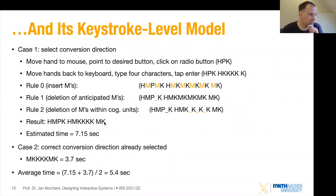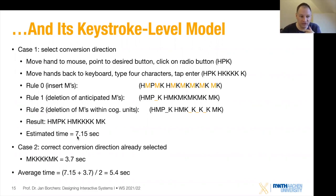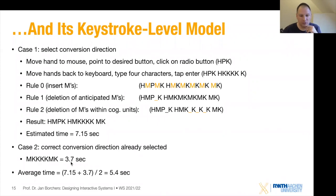Since the other rules don't apply here — no consecutive terminators, no command terminators, no overlapping M with system response — we add up all the timings and get 7.15 seconds for case 1. In case 2, the correct conversion direction was already selected, so we skip the first part. We just have M, four Ks, M, K — entering the value and pressing enter — giving 3.7 seconds. So it's roughly twice as fast when the direction is already set.